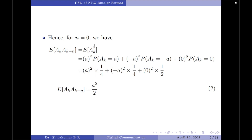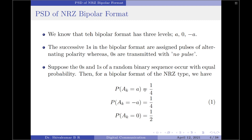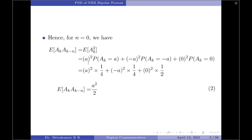Let us now substitute the values of the amplitudes. We have three amplitudes: plus A, minus A, and 0. The expectation is computed as: A² × P(A_k = A) + (−A)² × P(A_k = −A) + 0² × P(A_k = 0). From our previous expressions, P(A_k = A) = 1/4, P(A_k = −A) = 1/4, and P(A_k = 0) = 1/2.